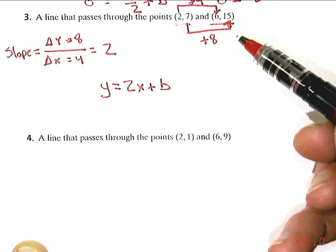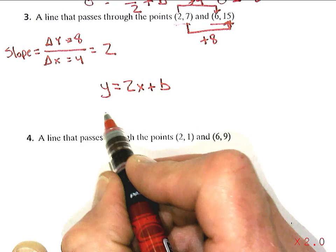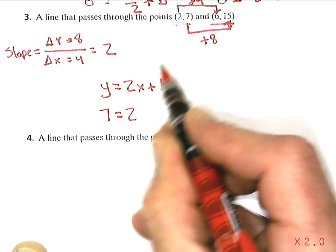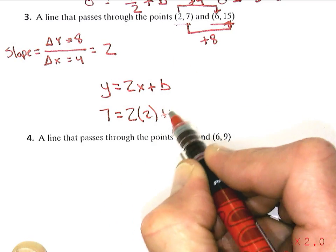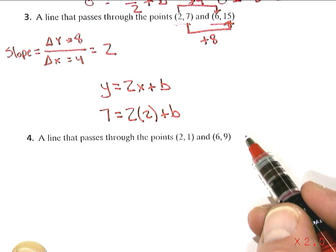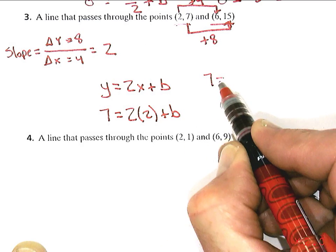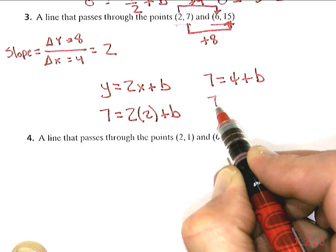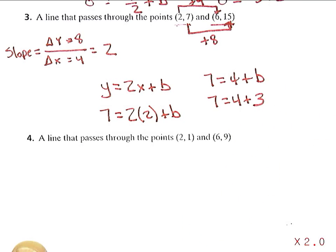So if I go with the first point and use that y, 7 equals 2 times x, which in this case is 2, plus b. And it should be kind of obvious now, if I go 7 equals 4 plus b, then that means that the b has to be 3 for that to be true.